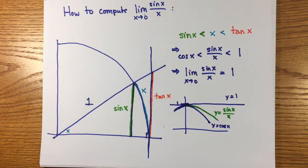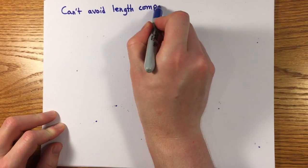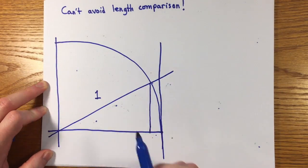These inequalities, though, are the key points, and they require a proof, one that doesn't depend on the derivatives of sine or tangent, since that's what we're after in the first place.